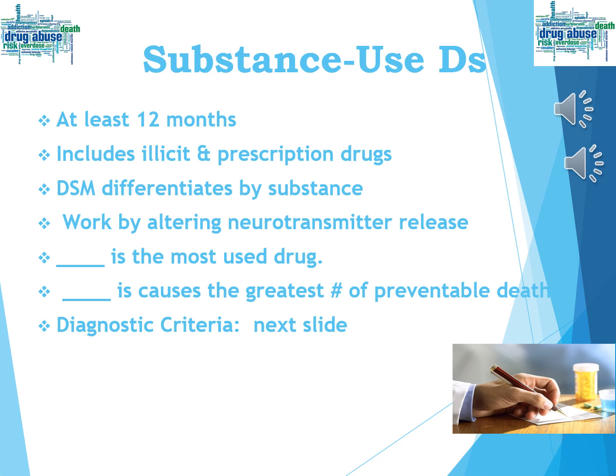Substance use disorders include both illicit — in other words illegal — drugs and prescription drugs. The DSM doesn't differentiate between those, but does differentiate by particular substance, whether it's cannabis, PCP, alcohol, and so on. To qualify, the person has had to have the issue for at least 12 months. The most used drug is caffeine. The drug associated with the greatest number of preventable deaths is tobacco, specifically its drug nicotine — not heroin, not even alcohol.